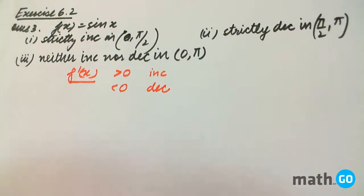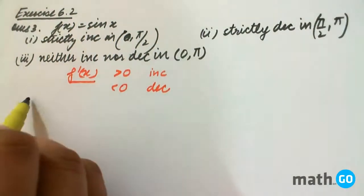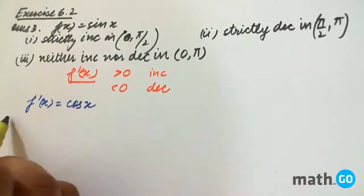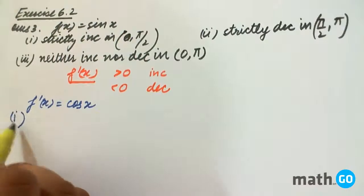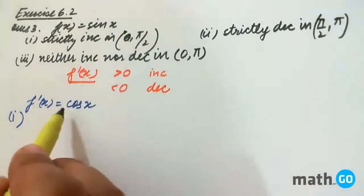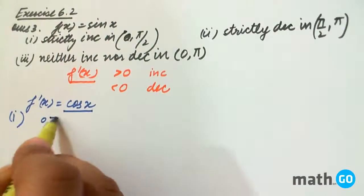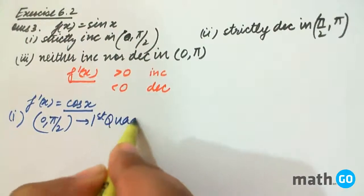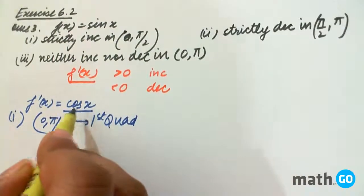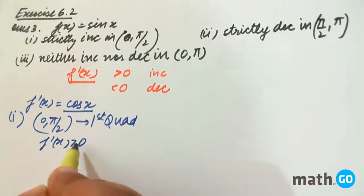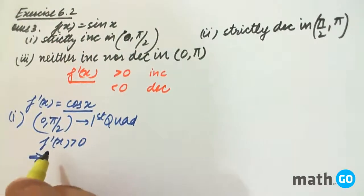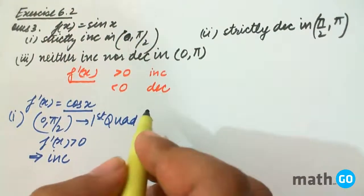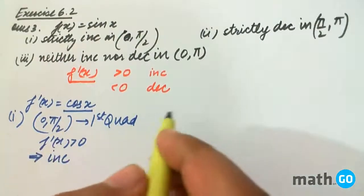So for this case, we find f(x) equals sin x, then f'(x) equals cos x. If we look at the first part of the question, it says 0 to π/2, and we know from 0 to π/2, that is the first quadrant, cos x is positive. That means f'(x) is greater than 0. So this implies in this interval it is strictly increasing, because we don't have to check the boundary points here.